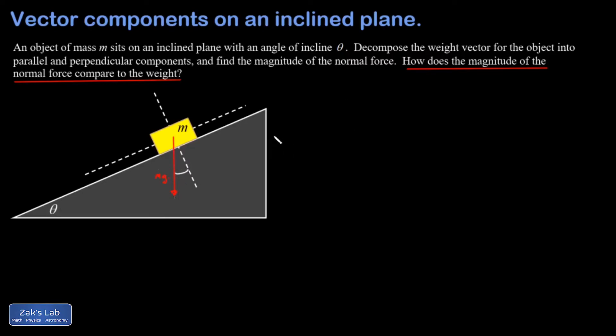We discover that theta is exactly the same as that unknown angle we were looking for. So from now on when you see an inclined plane problem, you know that the angle between the weight and the perpendicular is given by theta, the same as the angle of incline for the ramp.